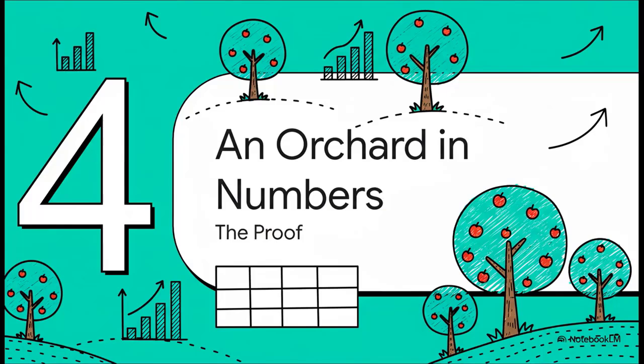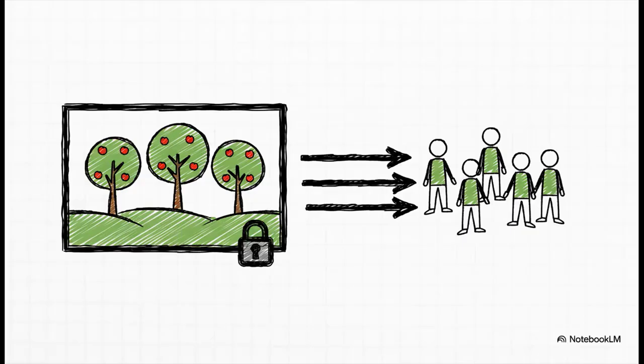An orchard in numbers: the proof. That's the theory, but theory is one thing. To really see this in action, we've got to look at some actual numbers. So let's leave the taxi behind and head over to a classic example, an apple orchard. The setup here is super simple. The orchard itself - the land, the trees - that's our fixed input. We can't change that. The workers we hire to pick the apples, that's our variable input. And our whole goal here is to figure out the sweet spot: how many workers do we hire to get the absolute most apples off those trees?